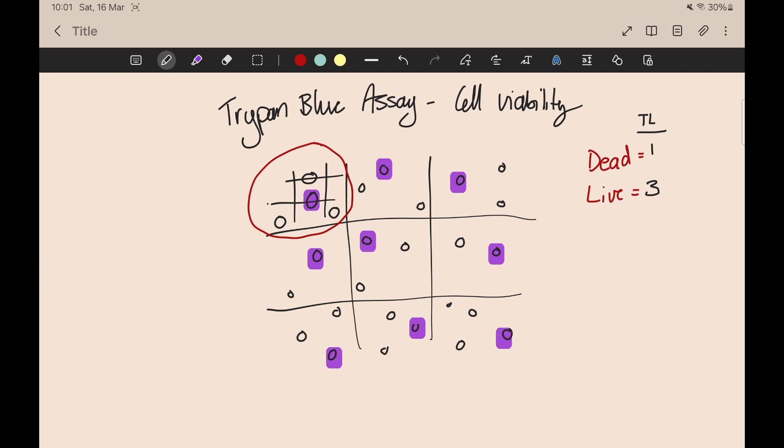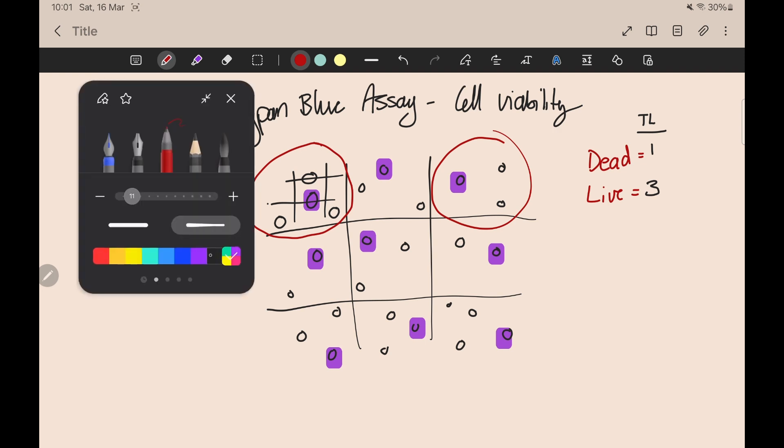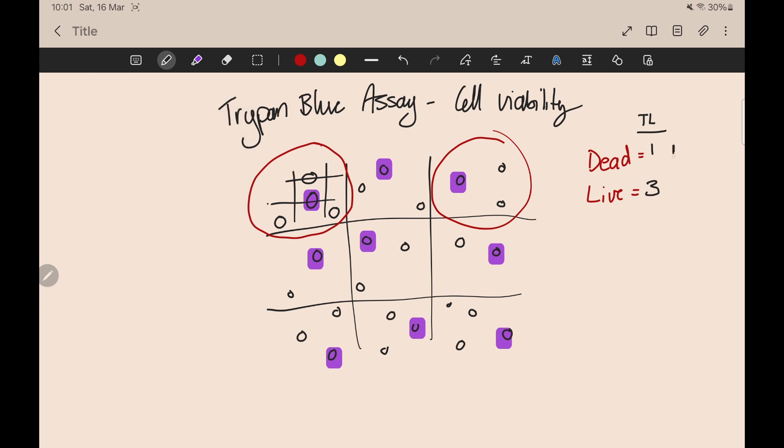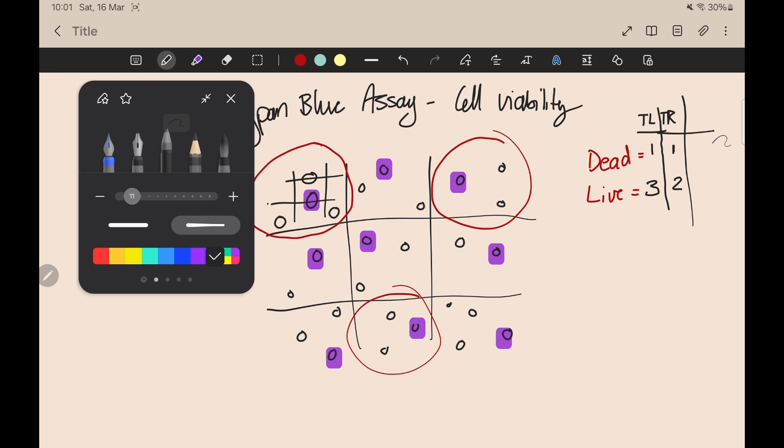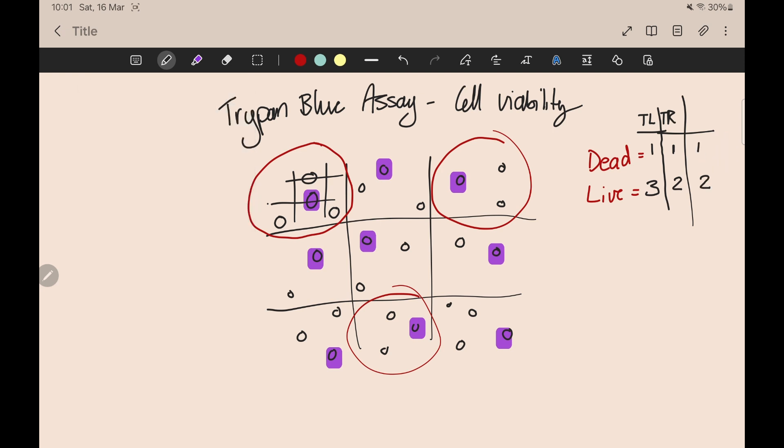After you've counted that one, you want to focus on the top right square over here. So on that one, we've got one dead and two live cells, right? That's the top right. So just keeping track here. And then you want to focus on the bottom middle square there. And you can see that we've got two live and one dead. So bottom, middle. You should have three counts for the unstained cells. So what we've called live here, and three counts for the stained or dead cells.